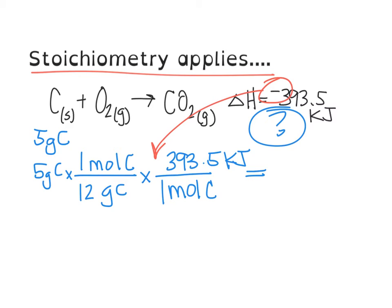So in this problem, we would take our five grams divided by the 12 times 393.5 and we would get an answer of 163.96 kilojoules and it is going to be still negative because that is the heat is being released. That's what our negative is telling us. So we can do regular stoichiometry and just treat this ΔH value as just another term in the chemical equation.